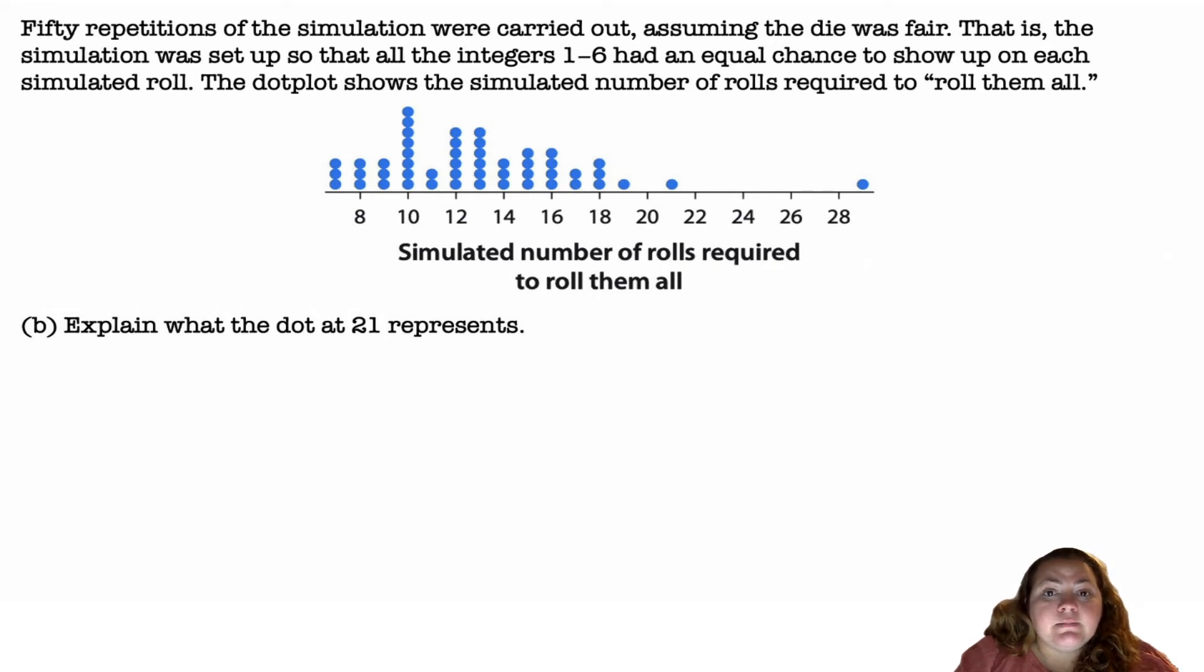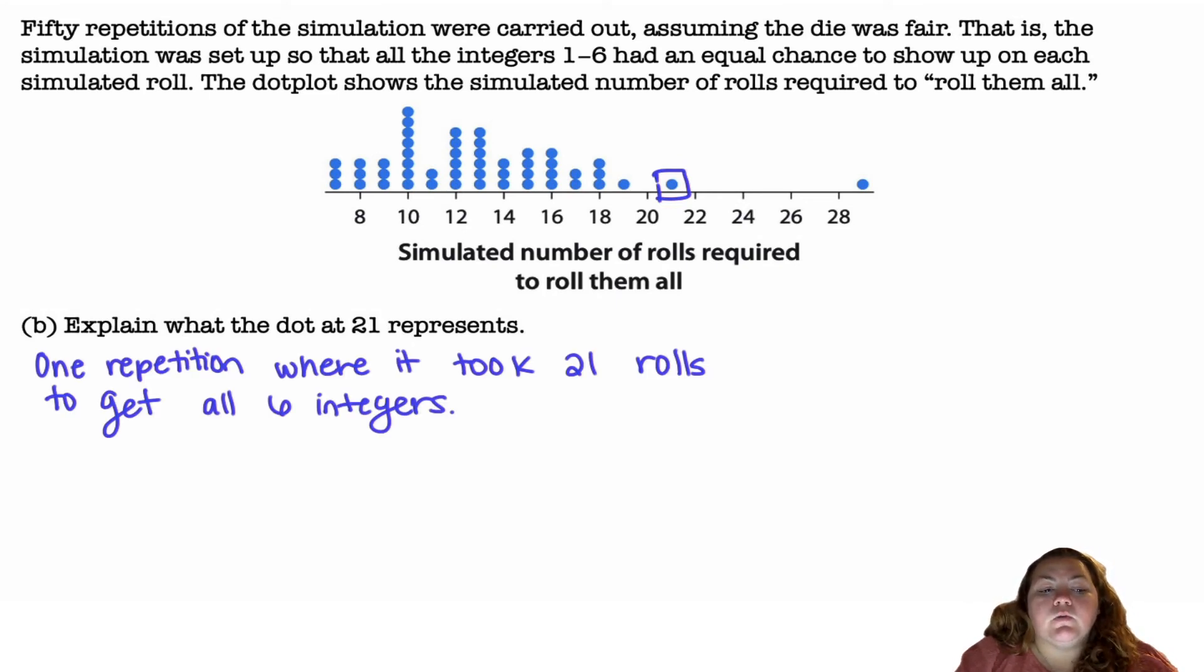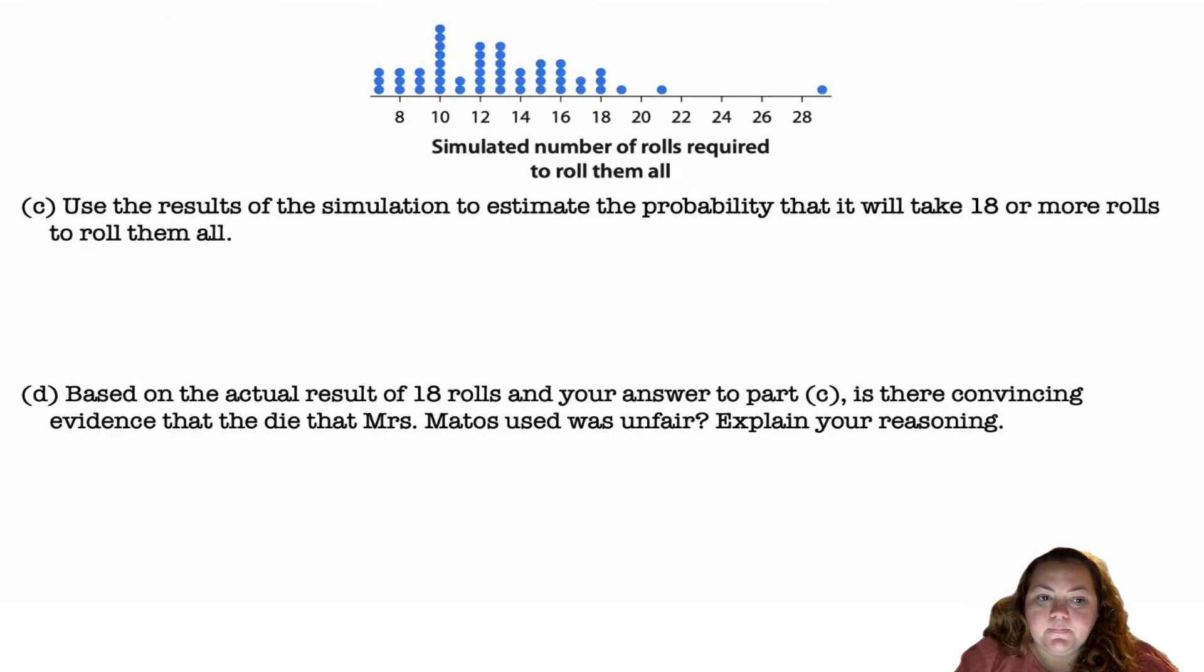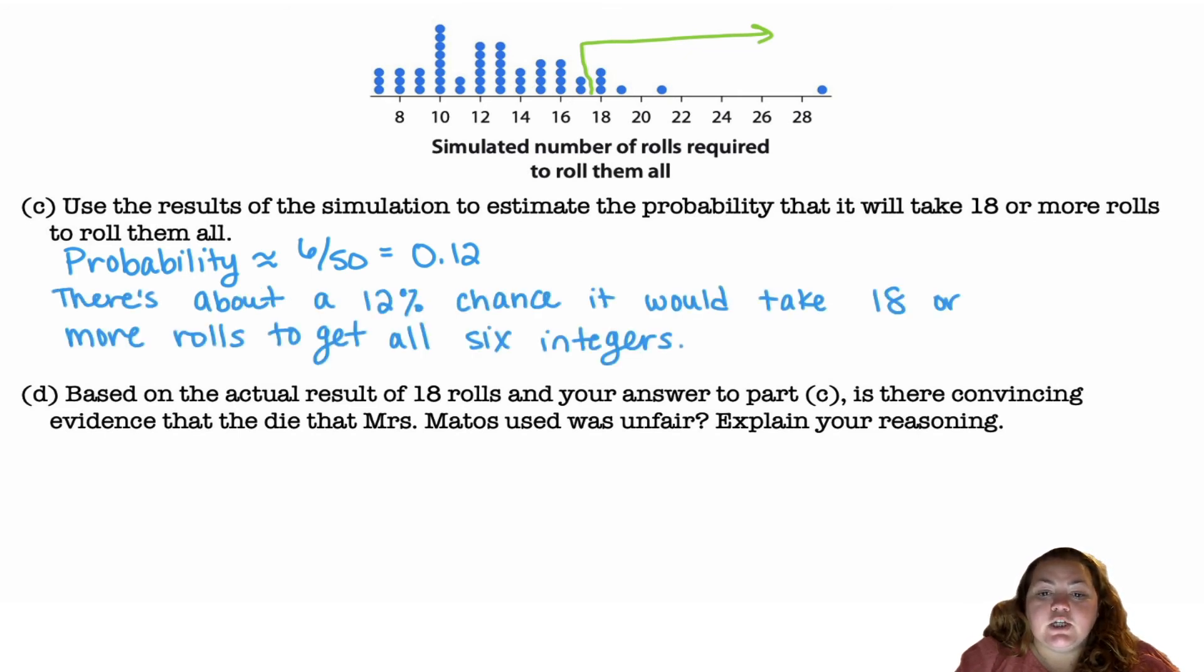Three times it only took seven rolls. Three times it took eight rolls. One of the times it took 29 rolls to get all six of the numbers. Explain what the dot at 21 represents. It is one repetition where it took 21 rolls to get all six integers. Use the results of the simulation to estimate the probability that it will take 18 or more rolls to roll them all. 18 or more would be all of these dots from 18 and above. I have six out of 50 total dots there, so there's about a 12% chance it would take 18 or more rolls to get all six integers.